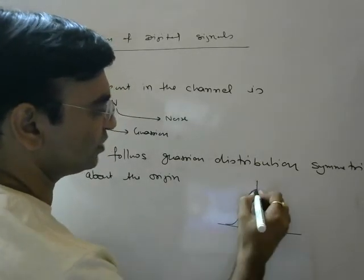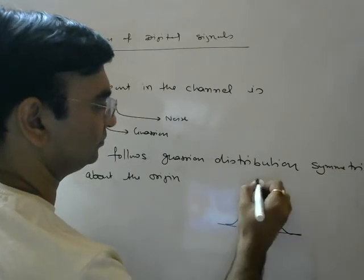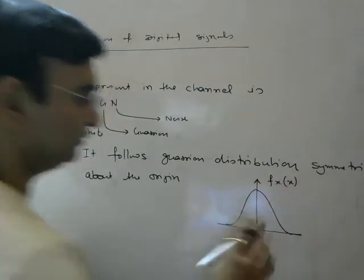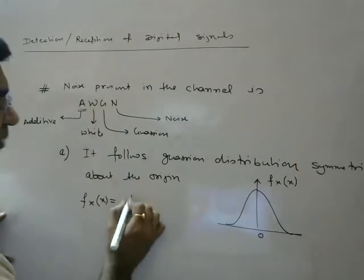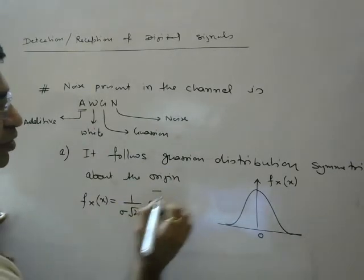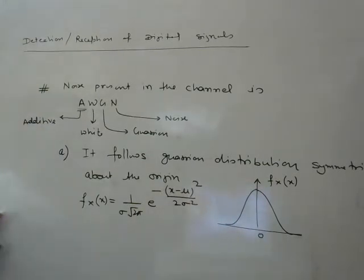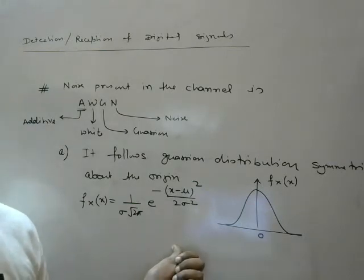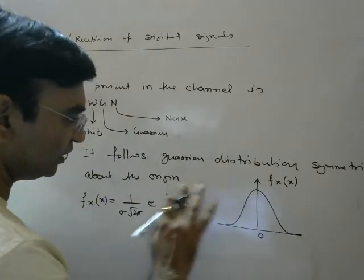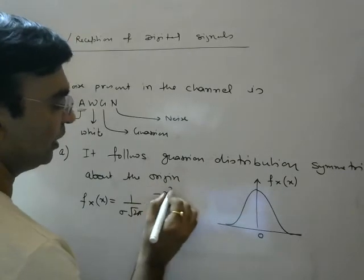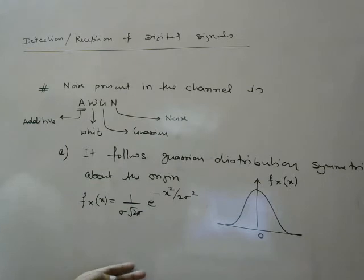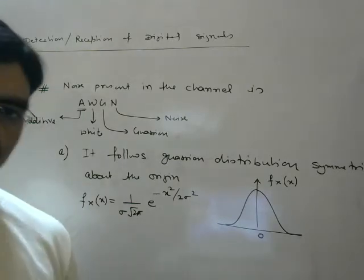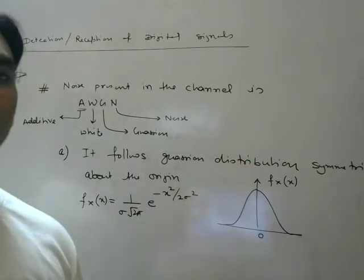The Gaussian distribution looks like a bell curve — this is its PDF. The general formula for the Gaussian distribution PDF is: (1 / σ√(2π)) · e^(−(x−μ)² / 2σ²). However, since this distribution is symmetric about the origin (not just the mean), the value of μ becomes 0, and the formula simplifies to: e^(−x² / 2σ²). So the noise that obeys this Gaussian distribution — symmetric about the origin — is our Gaussian noise in the channel.